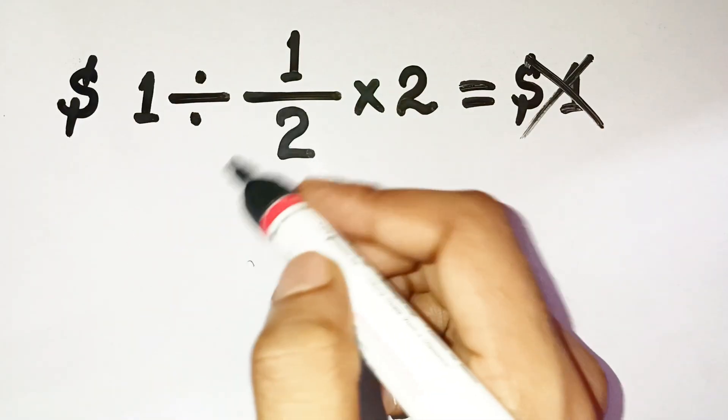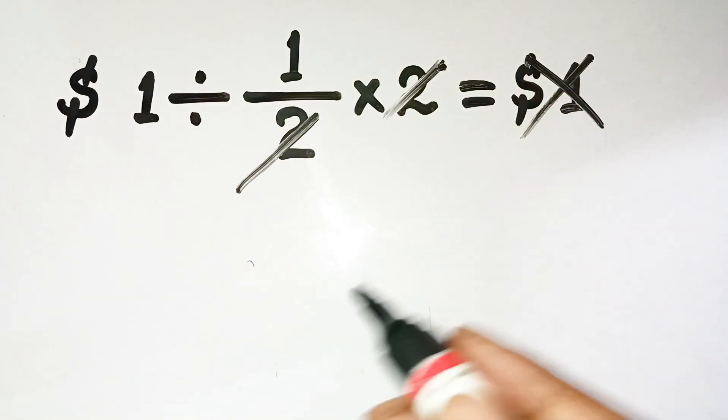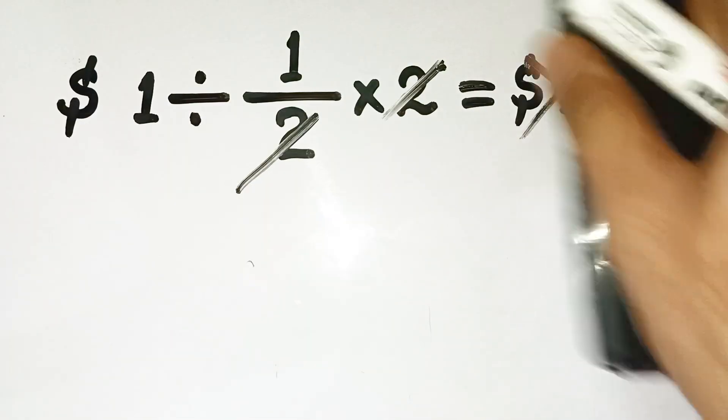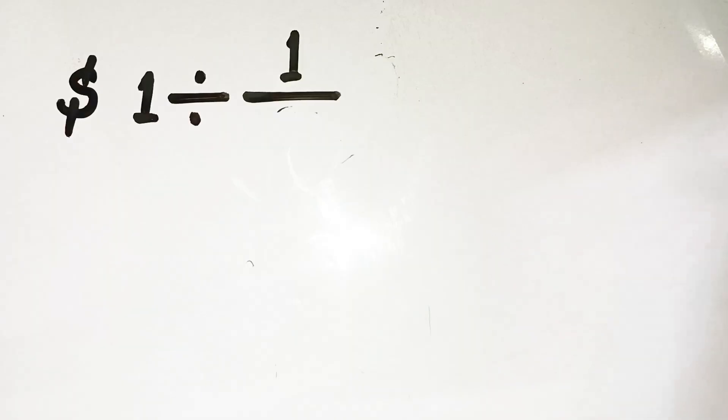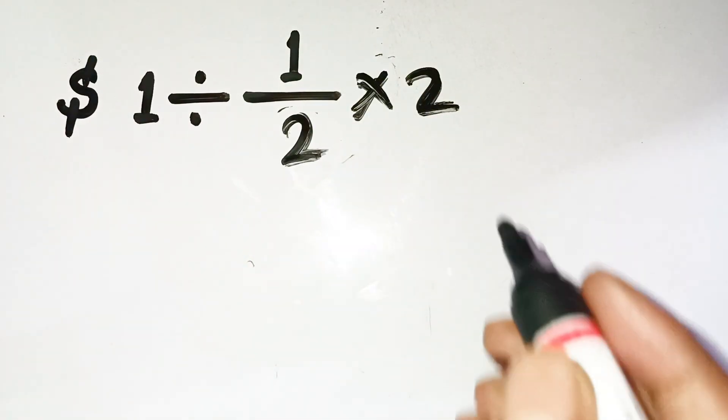And I know what you're thinking. Oh, the twos cancel out. So it's just 1 ÷ 1 = 1. Nice and clean, except that's completely wrong. That's the trap everyone falls into. The problem here isn't about canceling. It's about the order of operations. Let's go step by step, and I promise once you see it, it'll make total sense.